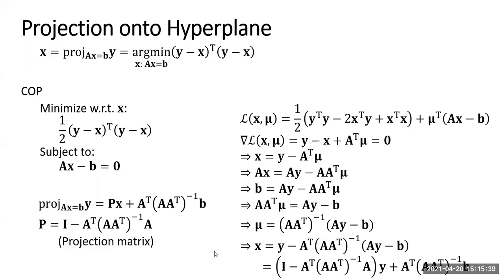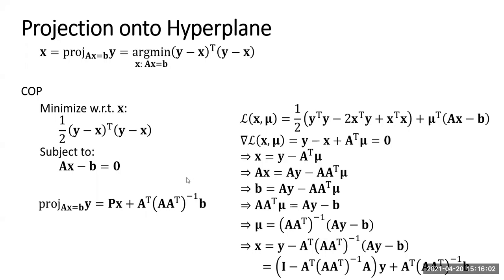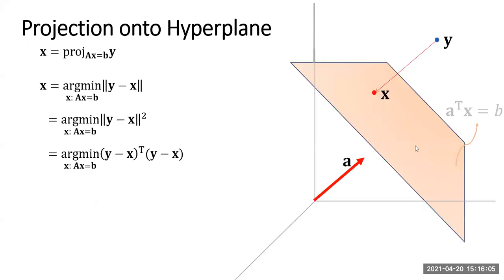What if we project a point that is already on the hyperplane? We will get it back. If it's already on the hyperplane, there's no need to project it further. So applying the projection operation will give back x. That will be part of the homework for you to figure out.